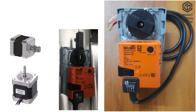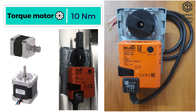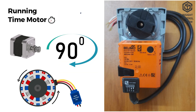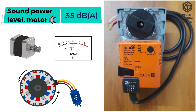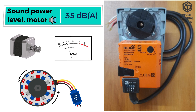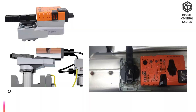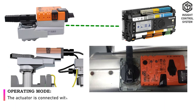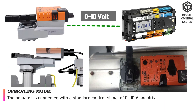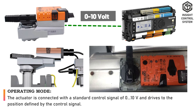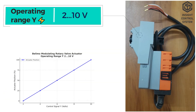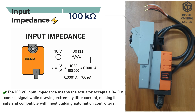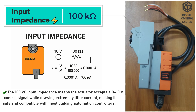Functional data: torque of motor is 10 Nm. Running time of motor is 90 seconds at 90 degrees. Sound power level of motor is 35 dB. The actuator is connected with a standard control signal of 0 to 10V and drives to the position defined by the control signal. Operating range is 2 to 10V. Input impedance is 100 kΩ.